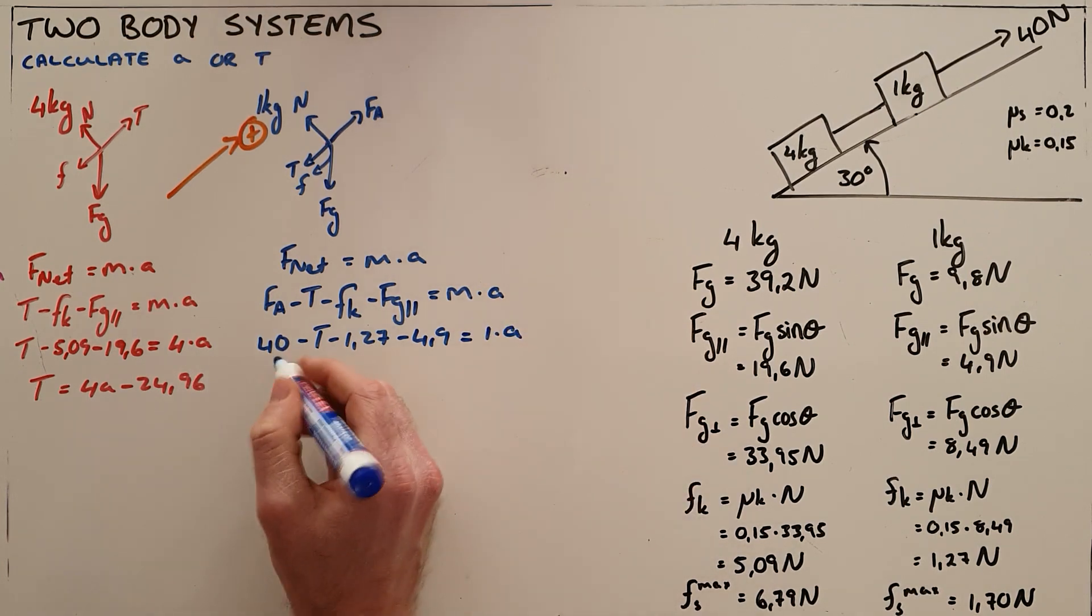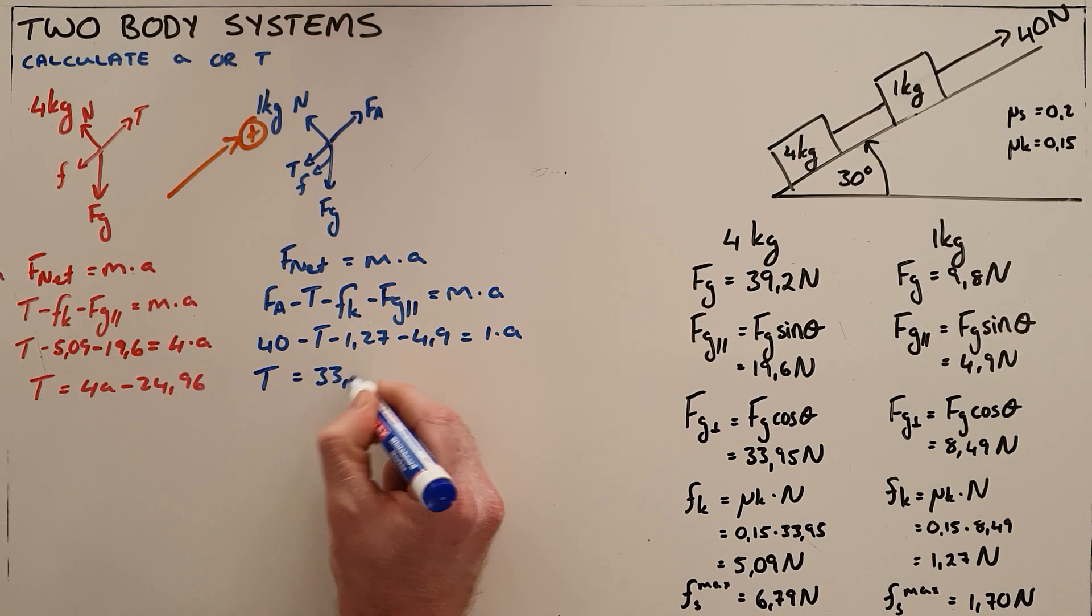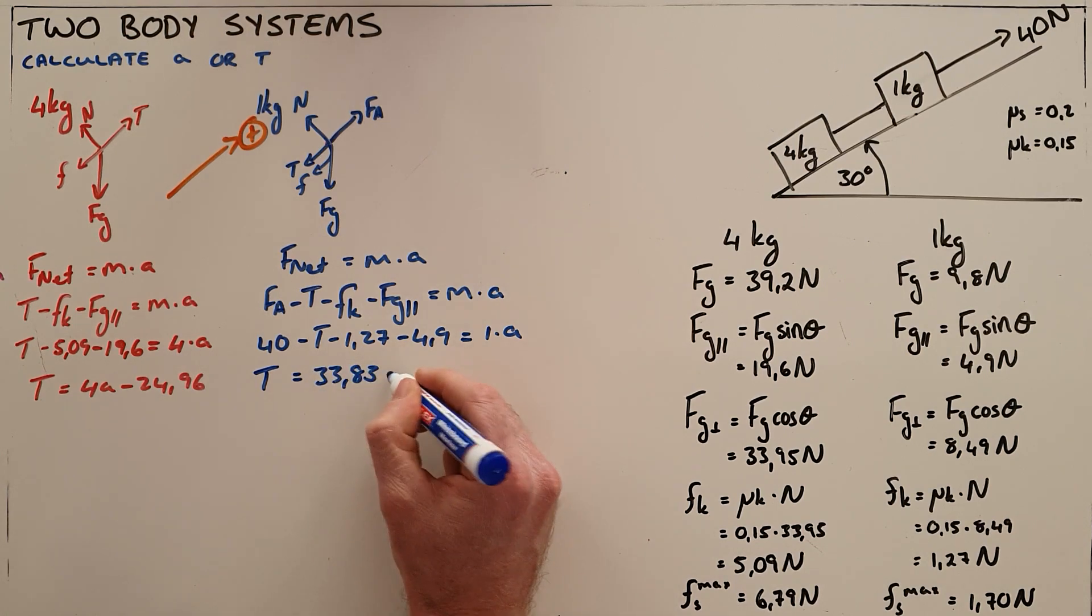Mass of this object is 1 and so I get an expression here that says that the tension is equal to 33.83 minus a.